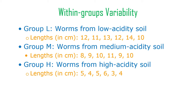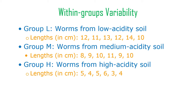Group H worms are much shorter: 5, 4, 5, 6, 3, and 4 centimeters. We can graph these on three horizontal box plots. I made them symmetrical just to make life simpler, so the mean and median are essentially the same in all three groups.